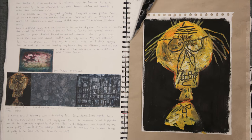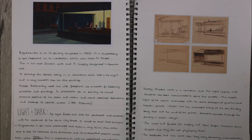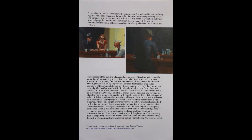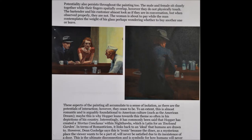In the example investigating Hopper's Nighthawks, the student writes about the painting: 'Potentiality also persists through the painting too. The male and female sit closely together while their fingers spatially overlap. However, they do not physically touch. The bartender and his customer almost look as if they are in conversation, but when observed properly, they are not.' It continues: 'these aspects of the painting all accumulate to a sense of isolation as there are potentials of interaction. However, they cease to be. To an extent, this is almost romantic and is arguably foundational to American culture, such as in the American dream.' Again, in this brief passage, the student brings together formal analysis of the composition with an understanding of meaning, intention and context.